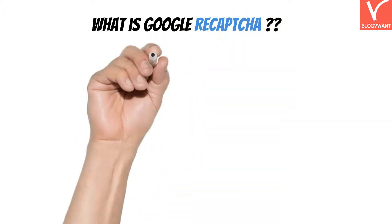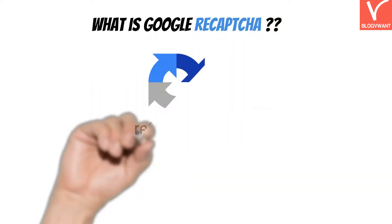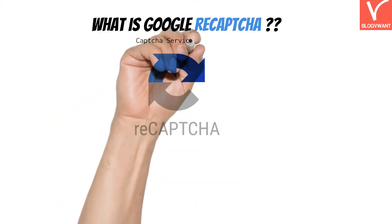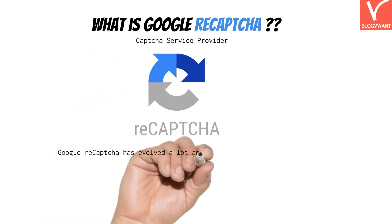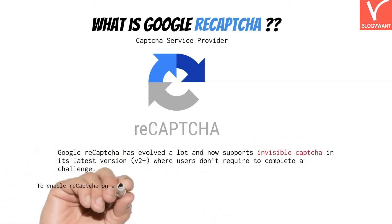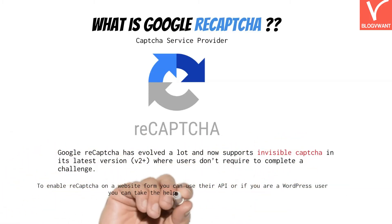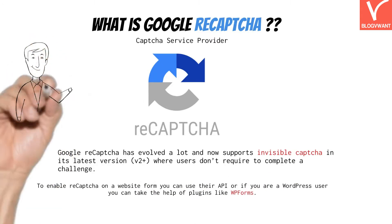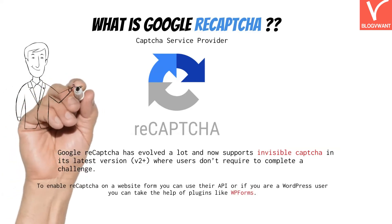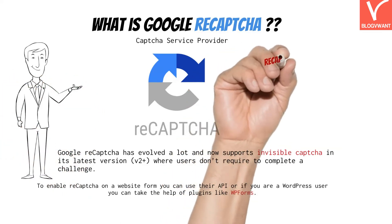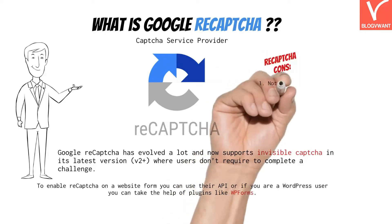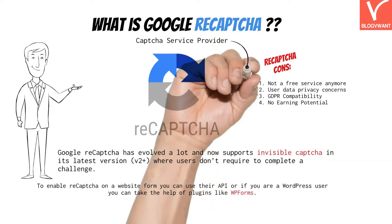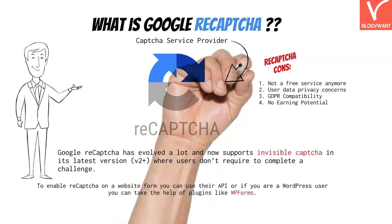The next common question is what is Google reCAPTCHA? Don't be confused between CAPTCHA and Google reCAPTCHA. Google reCAPTCHA is a CAPTCHA service provider — the oldest one, started by Google back in 2007. Since then, reCAPTCHA has been serving millions of CAPTCHAs every day to websites and applications. In the latest version, Google reCAPTCHA supports invisible CAPTCHA where users don't even have to solve a challenge. To enable reCAPTCHA on a website form, you can use their API or, if you are a WordPress user, you can use plugins like WPForms.